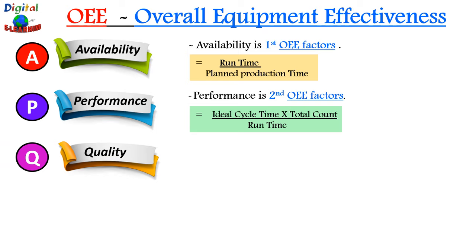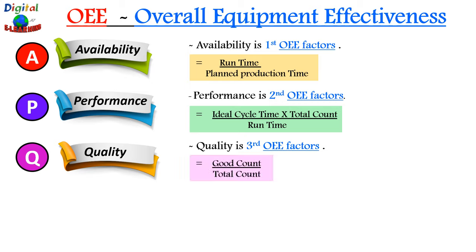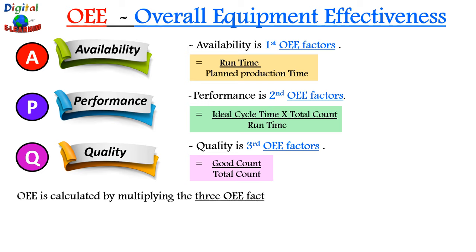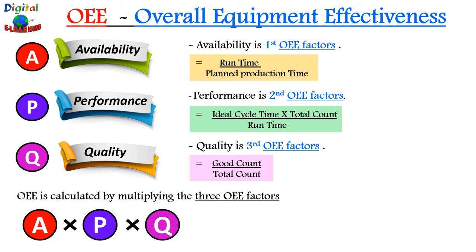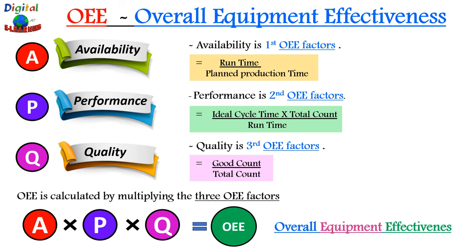The third OEE factor is quality. It takes into account how many defective parts versus good parts are being produced. The OEE quality metric can help identify the root cause of an issue and is quite similar to first pass yield. The formula for calculating quality is good count divided by total count. Since we have all three parameters — availability, performance, and quality — we calculate OEE by multiplying all three factors together to get the OEE score.